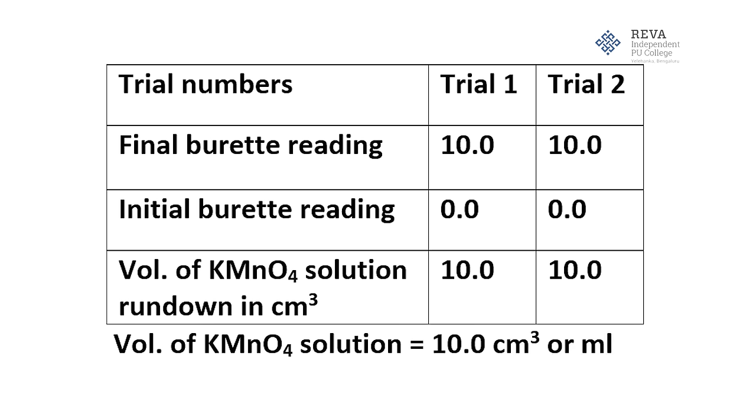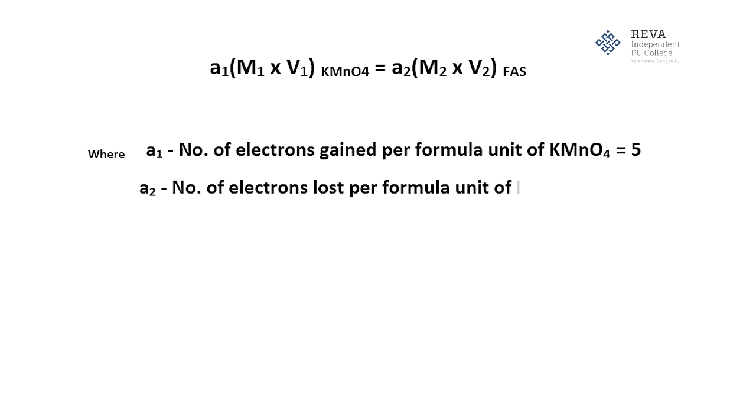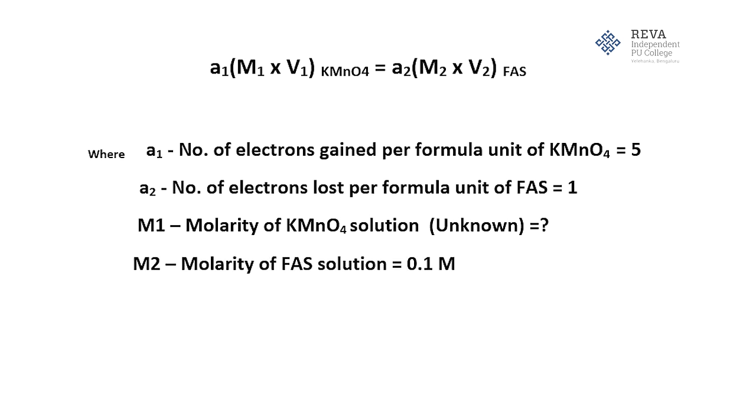Moving on, after knowing this, calculations we are going to do using a formula which is a₁(M₁ × V₁) = a₂(M₂ × V₂) where a₁ is number of electrons gained per unit of KMnO₄ which is equal to 5. Then, a₂ is number of electrons lost per formula unit of FAS which is 1. M₁ is molarity of KMnO₄ which is unknown to be find out. Then, M₂ is molarity of FAS which is equal to 0.1 molar. Then,